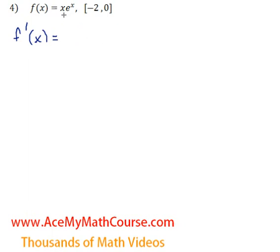So we're going to need to use the product rule. The derivative of x is 1 times e to the x plus x times the derivative of e to the x, which is just e to the x. And of course that was just the product rule in action. 1 times e to the x is e to the x plus x e to the x.